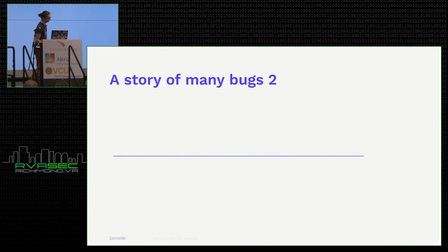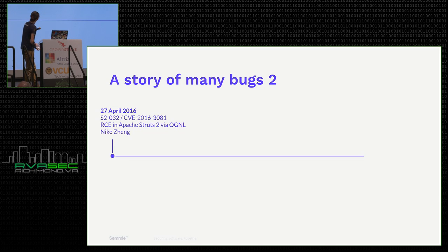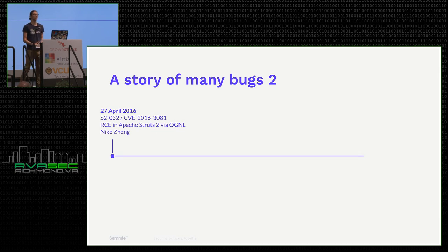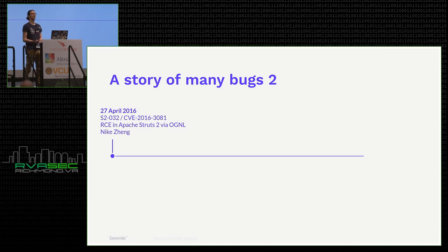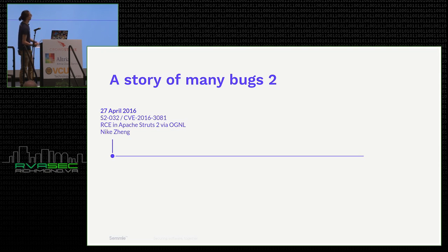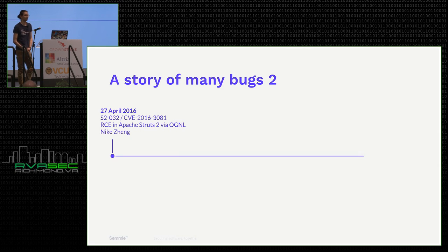Let me tell you a different story, also about some vulnerabilities. On the 27th of April 2016, a CVE in Apache Struts 2 was announced. It works similarly: Apache had a language called OGNL, similar to SpEL, predominantly used internally and not exposed to the user. The vulnerability arose when Apache was treating user data as an expression and evaluating it, allowing the user to run anything they wanted on the Struts server.